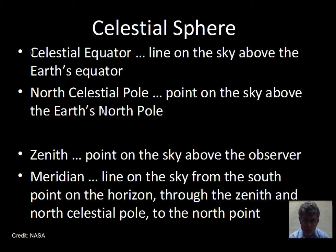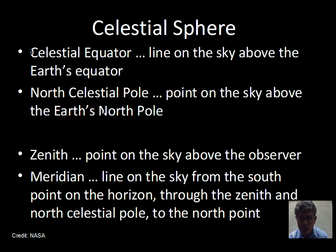The meridian is a line: if you look directly south at the horizon, take that south point, draw an imaginary line up to the zenith, then through the north celestial pole, and down to the north point on the horizon — that line is the meridian. It divides the sky into an eastern half and a western half. The sun is in the eastern half during the morning, and after local noon when the sun crosses the meridian, it's in the western half. My meridian line is different from the meridian for someone in California — the sun is on my meridian about two hours before it's on theirs.